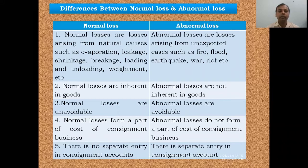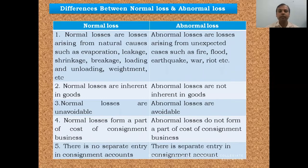Third difference: normal losses are unavoidable, but abnormal losses are avoidable. Fourth difference: normal losses form a part of the cost of consignment, but abnormal losses do not form a part of the cost of consignment. Fifth difference: there is no separate entry in the consignment account for normal loss, but in case of abnormal loss there is a separate entry depending on whether it is fully recoverable, not recoverable, or partly recoverable.